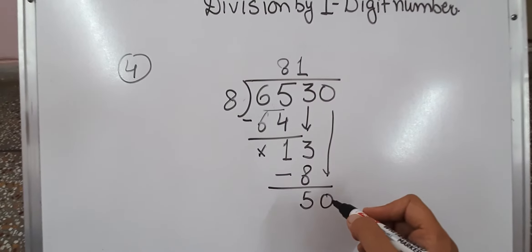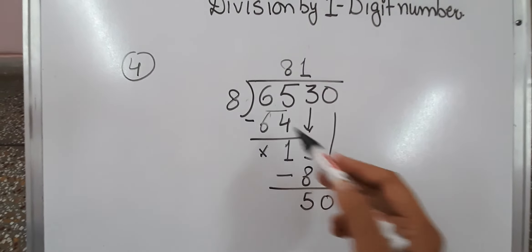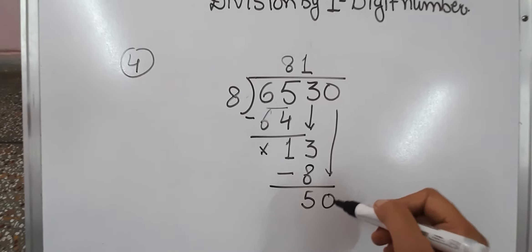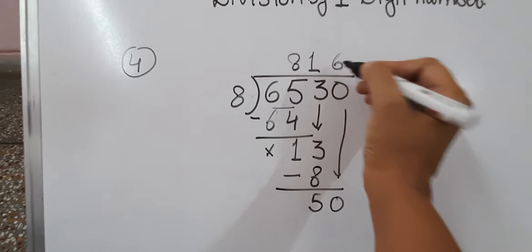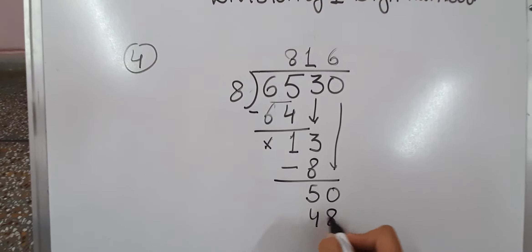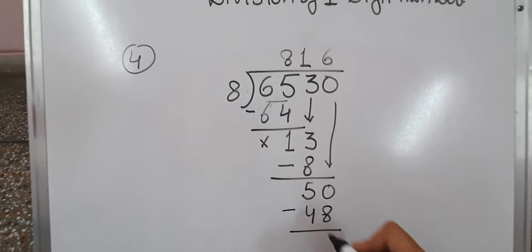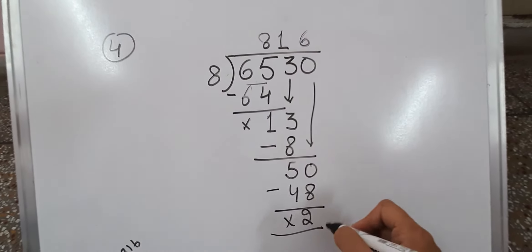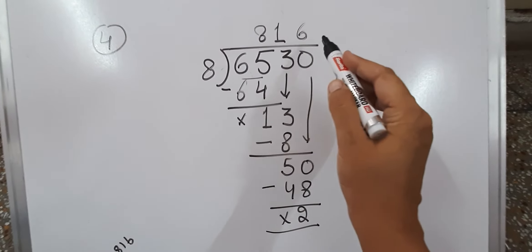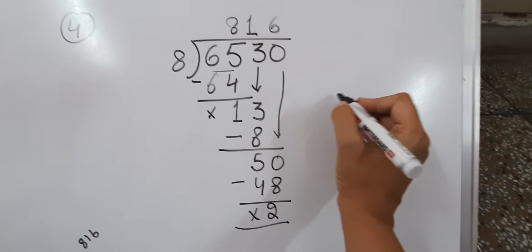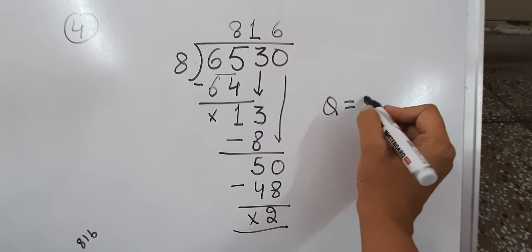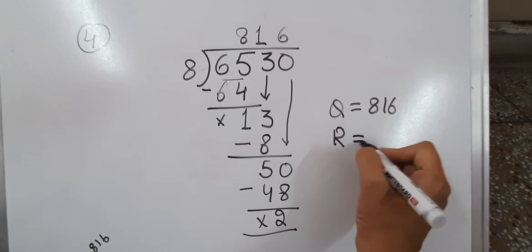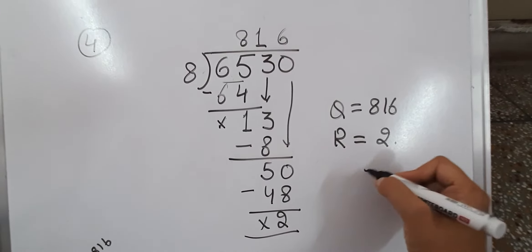Now we have 50. 8×5 is 48, which is just smaller than 50. We are going to subtract: 48, 49, 50 — 2 will be the remainder. And 816 will be the quotient. So quotient = 816 and remainder = 2. That is our answer.